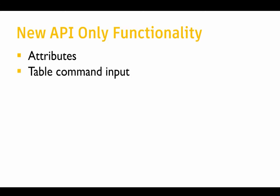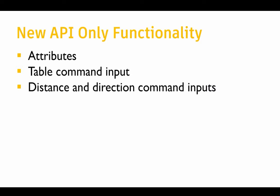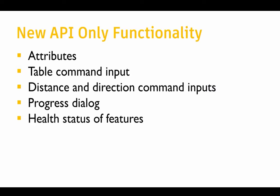There's a table command input — you can create your own commands inside Fusion with a command dialogue, and this is a new type of input where you can have tables. There's also a new type of command input to be able to define directions and offsets. There's a progress dialogue. You can query and find out the health status of features — has a feature failed to compute, is it suppressed, is it healthy? We added some utilities to make working with assemblies easier, and the ability to convert B-rep solids and surfaces to all-NURBS representation. We also added more events, including listening to what commands the user is running.